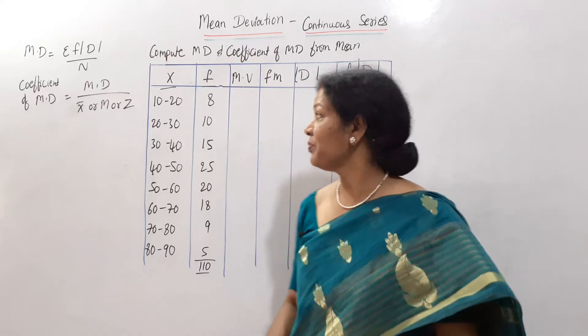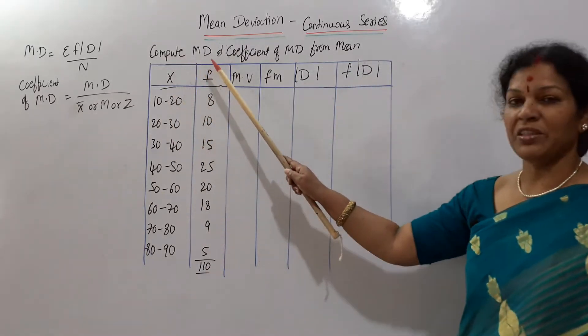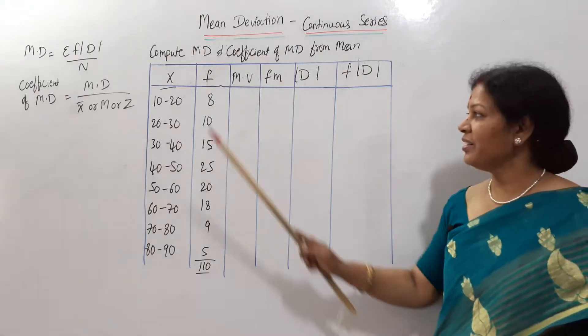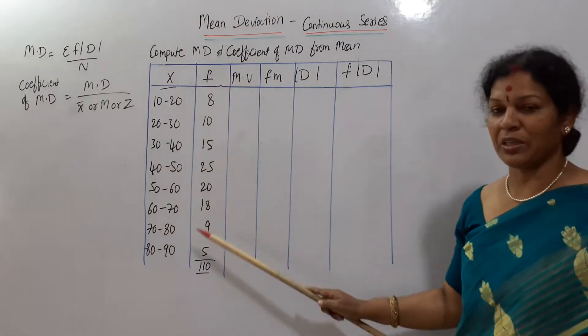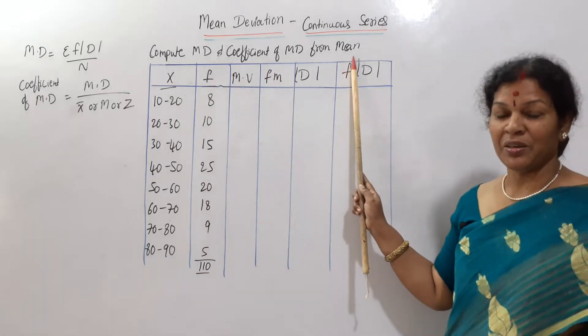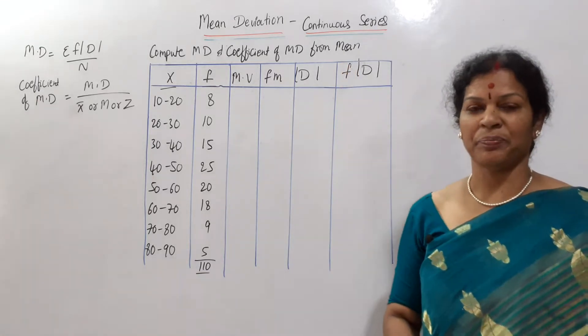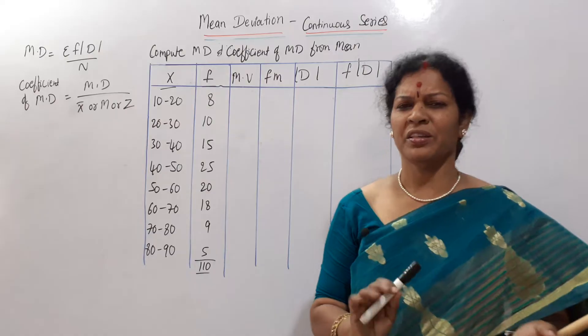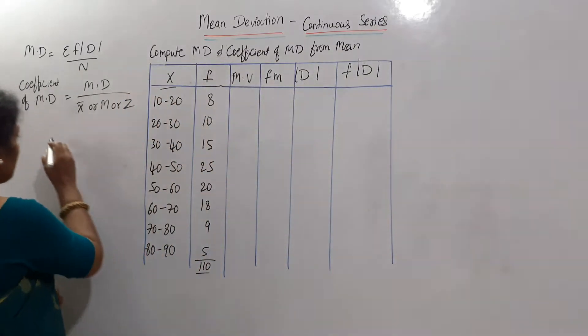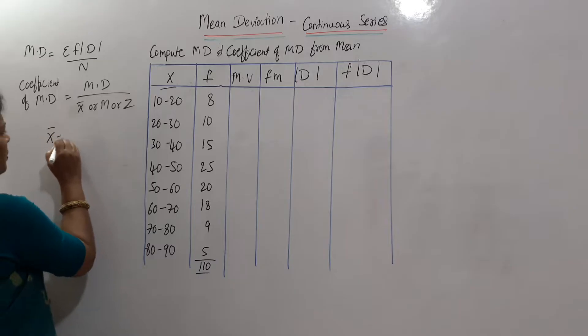We will see a problem. Compute mean deviation and coefficient of mean deviation from mean. Data is given as x and frequency. Asking us to take from mean. First we have to calculate the mean. What is the formula for mean? Simple formula we will take. Mean formula is x bar is equal to sigma fm by n.